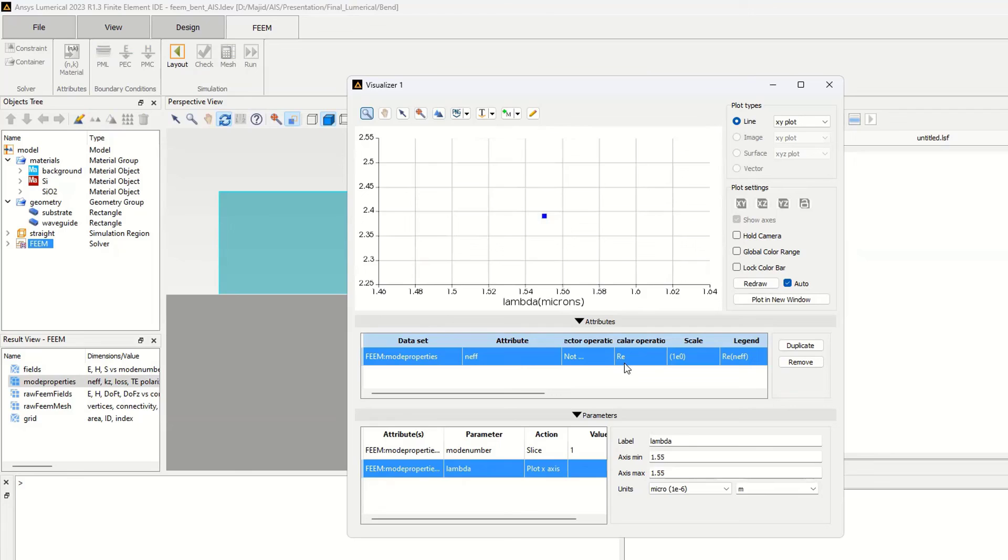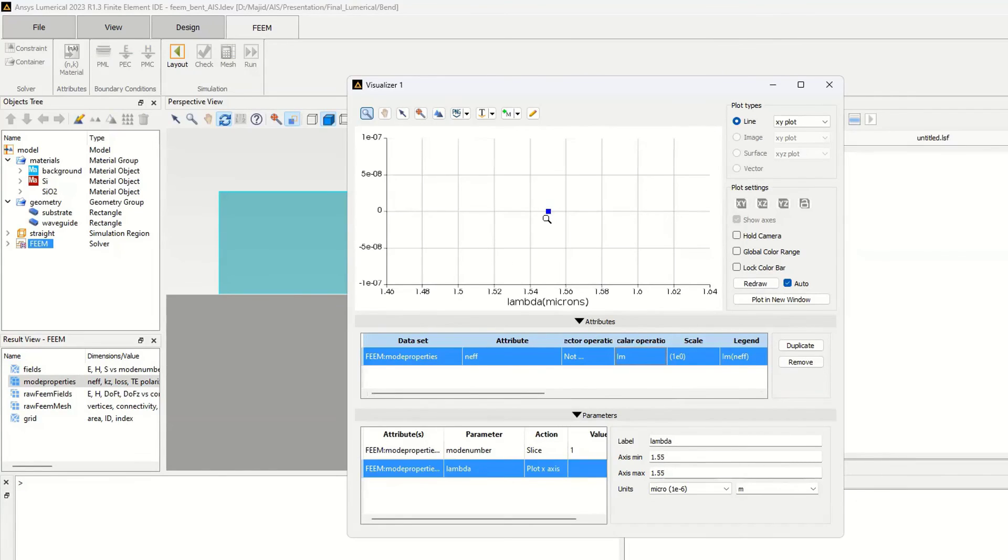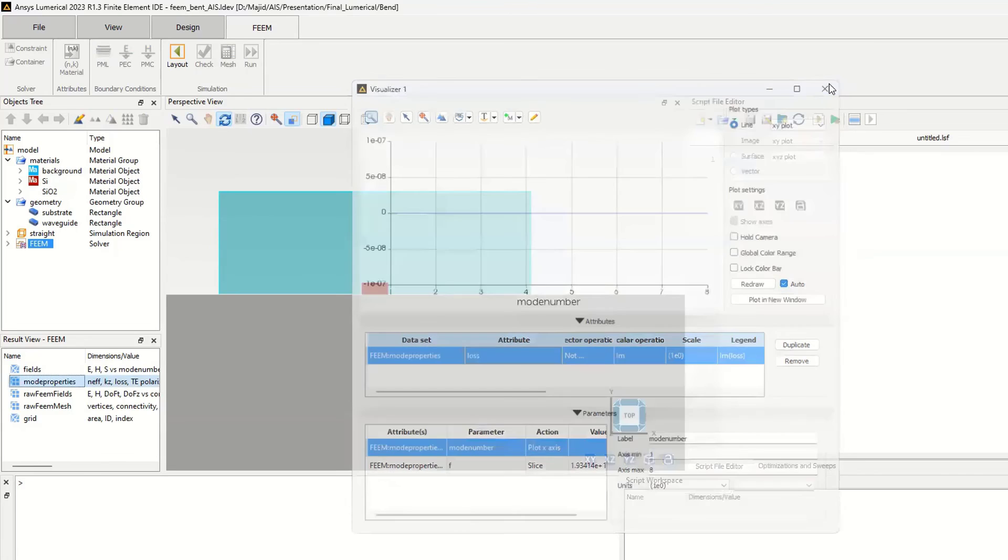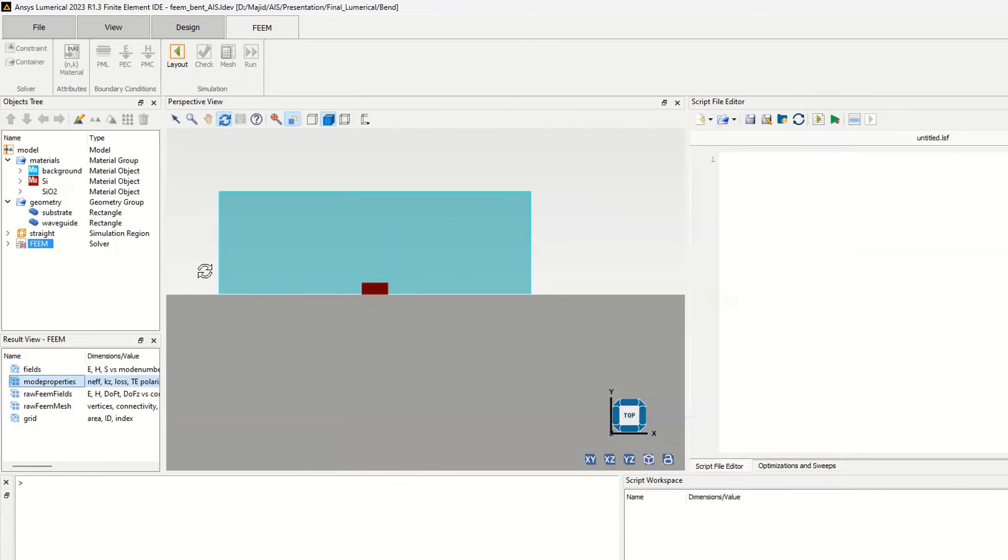I can look at the imaginary part, so the imaginary part of the effective index is zero. I can look at the loss - the loss also is zero. Now in the next step, we can go back from the layout to the simulation, to the edit mode I mean. This is the edit mode and we can change the parameters.